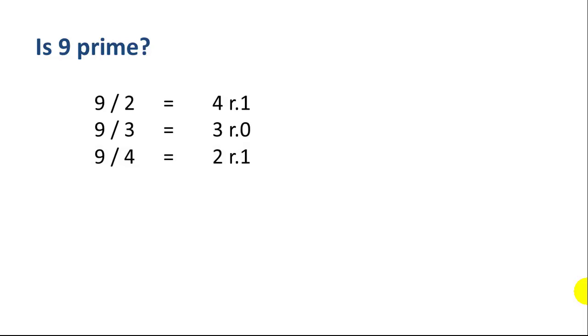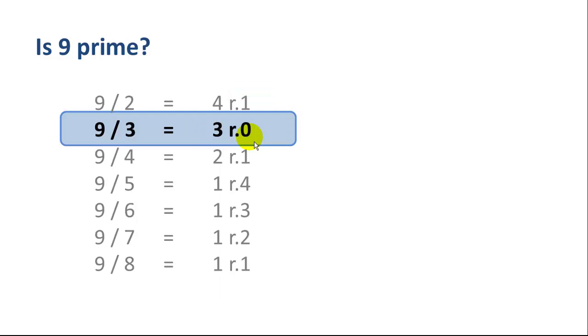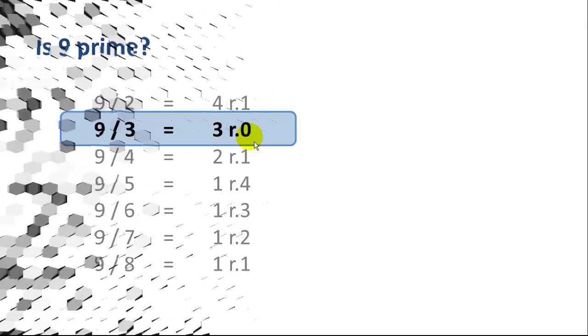But what we really have to check is all the numbers from 2 through 8. So we do 9 divided by 4, 9 divided by 5, 6, 7, and 8. Then we can see that we got one number among these where 9 is evenly divisible, therefore 9 is not prime. We're really only interested in the remainder in this calculation. In this case, 9 divided by 3 has the remainder of 0 that interests us.